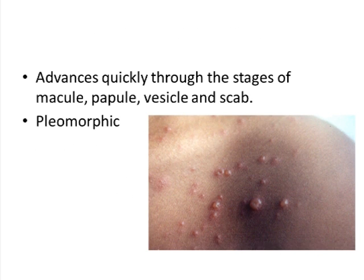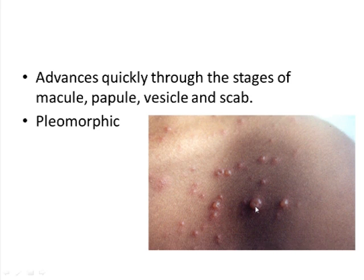An important characteristic of the chickenpox rash is that it shows all stages simultaneously: macule, papule, vesicle, and scab. This occurs because the rash advances quickly through all stages and also occurs in crops of eruption. Therefore, all stages of the rash can be seen at one time in a single individual. This characteristic is known as pleomorphism. As seen in the photograph, some lesions are vesicles with clear fluid while others are papular in nature.